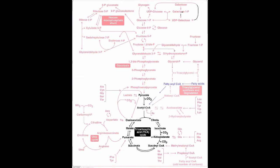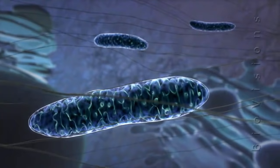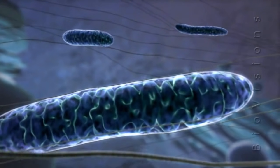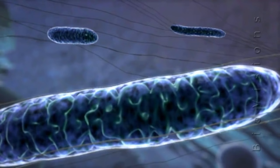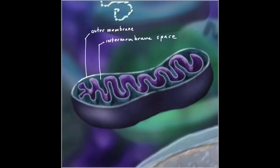Now, we've converted glucose to two molecules of pyruvate, and if there's oxygen available, this will be moved into the mitochondria. The mitochondria has a double membrane structure. The outer membrane has channels made of the protein porin, which allow any molecule smaller than 5,000 molecular weight to pass through freely, so the outer membrane is fairly permeable to small molecules. The concentration of small molecules such as ions and sugars in the inner membrane space is pretty much the same as the cytosol.